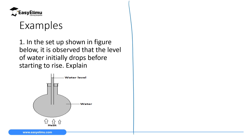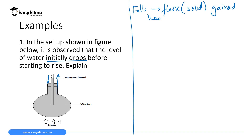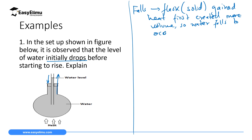Now let's handle an example question. The question reads: In the setup shown, it is observed that the level of water initially drops before it starts to rise — explain. The water fell first because the flask, which is a solid, gained heat first and created more volume, so water fell to occupy the volume created by the expanding flask.